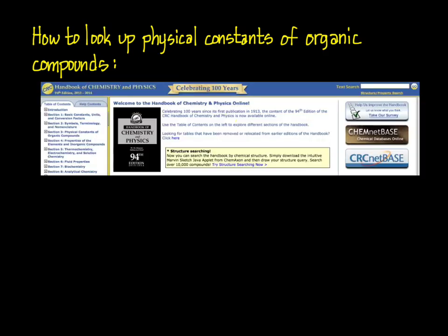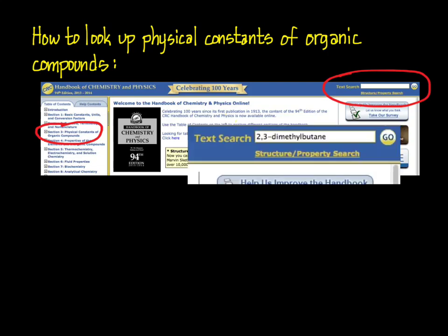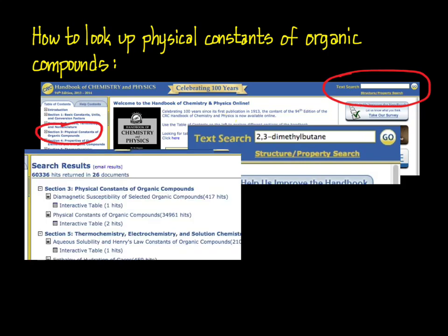You'll find a link to the CRC Handbook on Sakai. The main page of the CRC Handbook gives you access to all of its data tables, and it's a rather extensive set of physical data tables. The data you need for this experiment can be found in the Physical Constants of Organic Compounds table. Typing a compound name into the box brings up the search results for entries in the entire CRC Handbook, looking something like this.